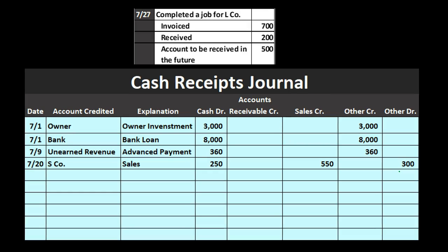Next transaction: completed a job for L company, invoice $700, received $200 cash, with $500 still to be received. Same type of transaction — although we made a sale, it goes in the cash receipts journal because we received cash. We record L company for the subsidiary ledger. Explanation is 'sales.' Cash goes up by $200. Sales go up by $700. The difference — $700 minus $200 — is a $500 increase in accounts receivable. Because this is a debit increase to accounts receivable (unusual for the cash receipts journal), it goes into the 'other debit' column rather than the normal accounts receivable credit column.